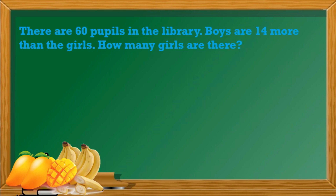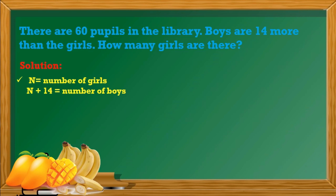Let us have another sample problem. There are 60 pupils in the library. Boys are 14 more than the girls. How many girls are there? For this one, let's use N to represent the number of girls. So N plus 14 will represent the number of boys. The total number of pupils: N plus N plus 14 is equal to 60.